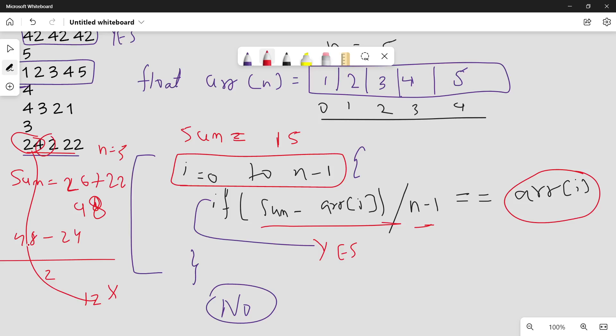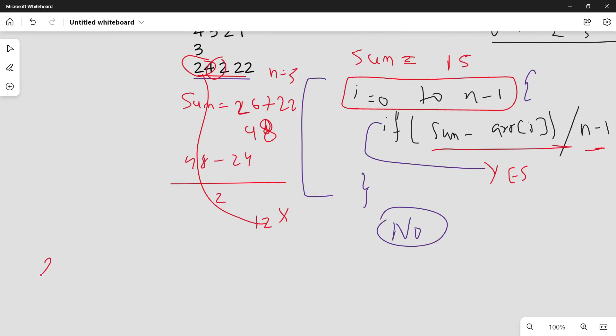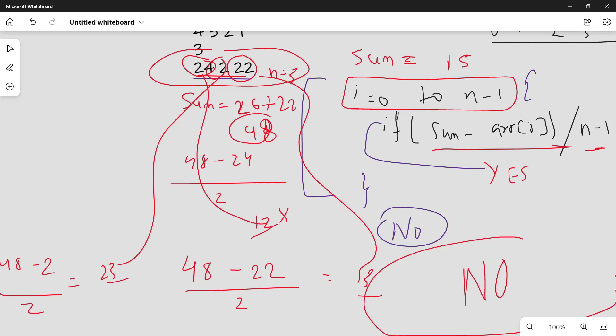Check for the next one: sum minus 2, which is 28 minus 2 by 2, which is 23. Is this element equal to 23? Nope. Next, for this value, calculate sum minus 22 by n minus 1, which is 13, and check if this element equals 13. No. So neither of these elements equals these conditions, so in this case your answer will be no. If any one of these conditions satisfy, you can print yes.